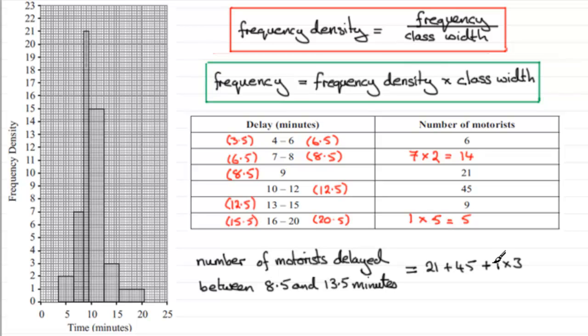The class width going from 12.5 to 13.5 times that frequency density. And if you work this out, it just comes to 69.